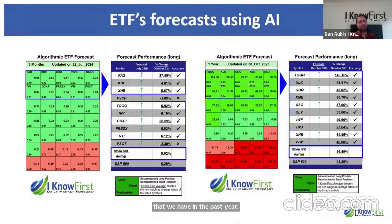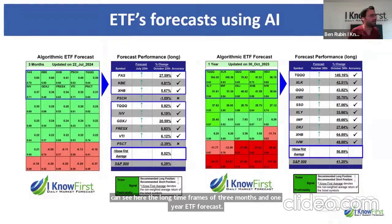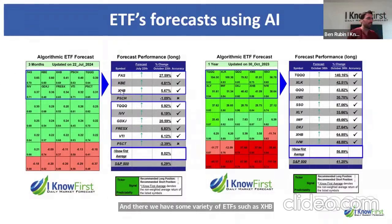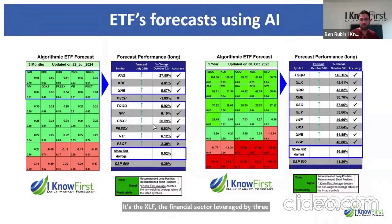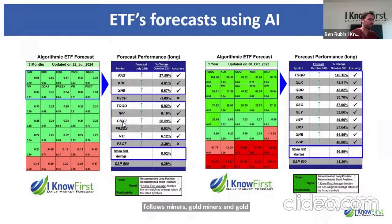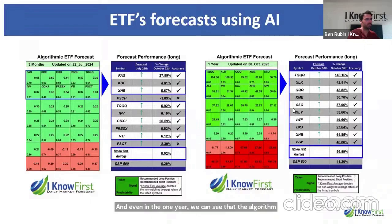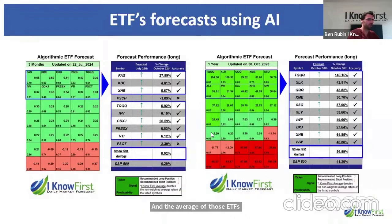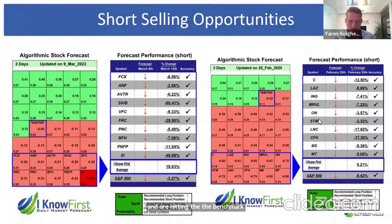We also provide predictions for ETFs. Looking at the three-month and one-year ETF forecasts, we see a variety of ETFs such as XHB (home builders), KVE (banks), FAAS (XLF financial sector leveraged 3x), and gold miners. The algorithm suggested buying an ETF following gold miners and gold itself — that made almost 21% in three months. In the one-year view, the algorithm identified the best sectors, beating the S&P benchmark by more than 15%.